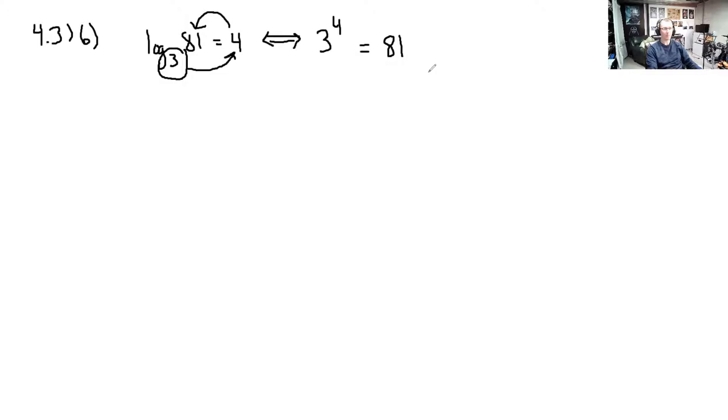So 3 to the 4th is 81. Alrighty, so that's it. That's the entire exponential form. So this is the solution to question 6. There's not a whole lot to it.